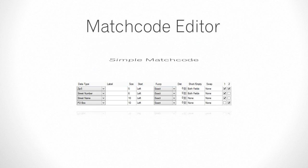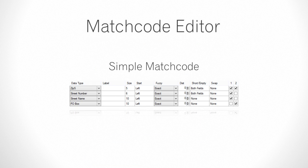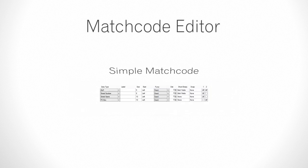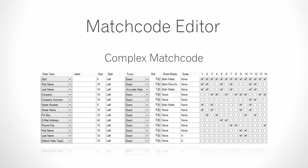These rules can be as simple as including only the zip 5, street number, name, and PO Box, with only two matching conditions. Or as complex as having a lot more information and way more matching conditions.